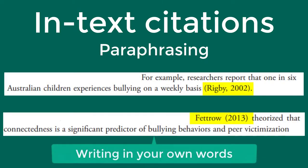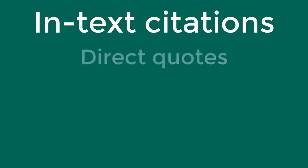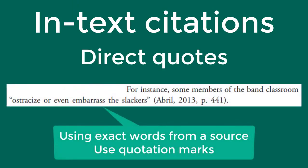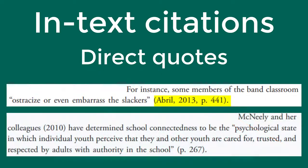Paraphrasing means that you are writing in your own words without directly quoting the material. If you directly quote the material using the source's exact words and quotation marks, you also need to include the page number in your citation by listing p. and the page number. If you mention the author's name in the sentence followed by the year, the page number will still be at the end of the sentence.